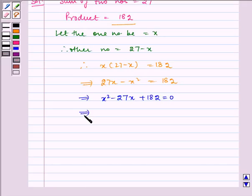Now, splitting the middle term we get x square minus 14x minus 13x plus 182 is equal to 0.